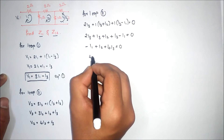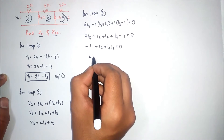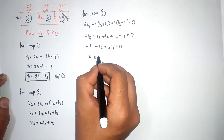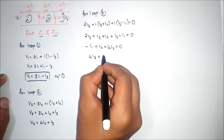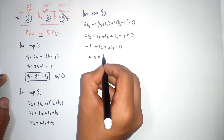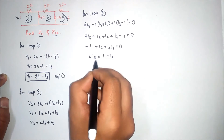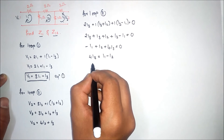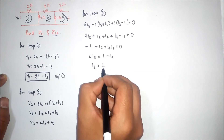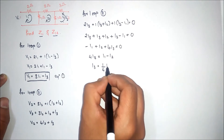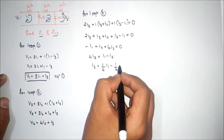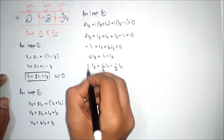Now we will make a term equation in i3. So i3 is equal to i1 minus i2, and solving further, i3 equals (1/4)i1 minus (1/4)i2.